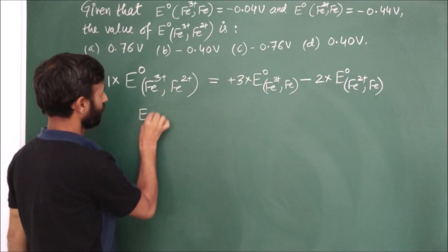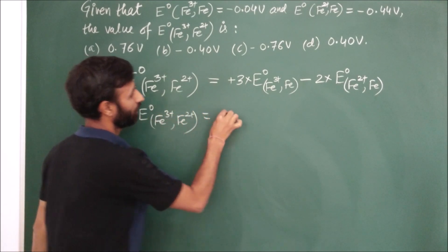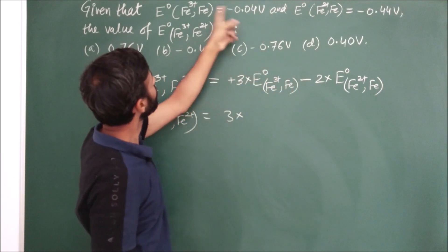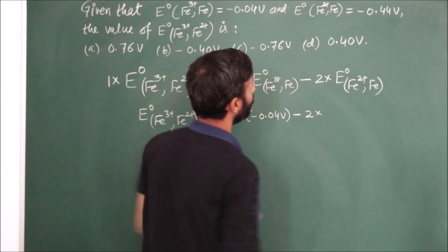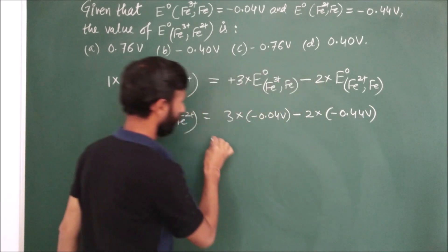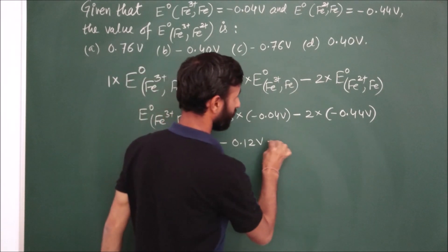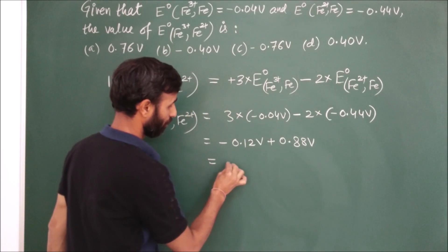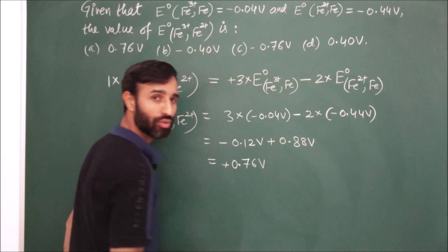So this value is three times E0 of Fe3+ to Fe, minus 0.04 volt, minus two times minus 0.44 volt. So it comes out to be plus 0.76 volt.